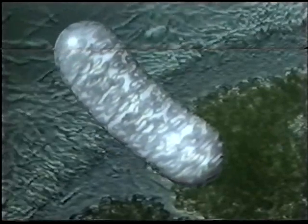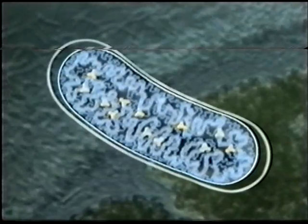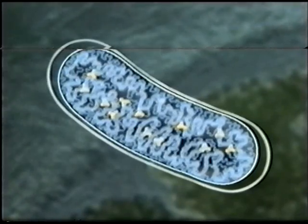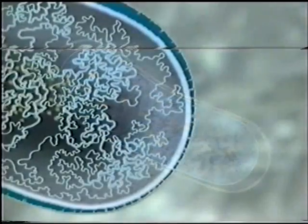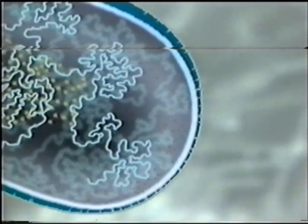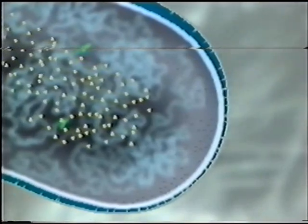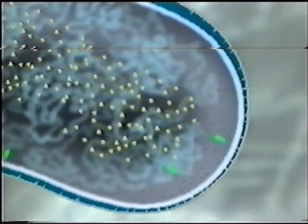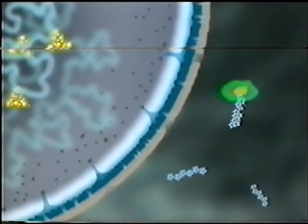In fact, bacterial anatomy couldn't be simpler: a cell wall surrounding an outer membrane containing a single long DNA molecule that sequences a few thousand genes. Bacterial cytoplasm is loaded with ribosomes — the molecular machines that build proteins — the enzymes that bacteria pump into their surroundings in order to digest organic material.